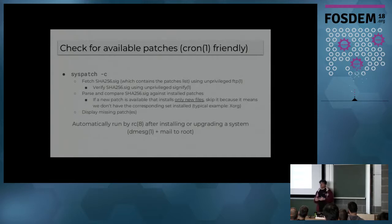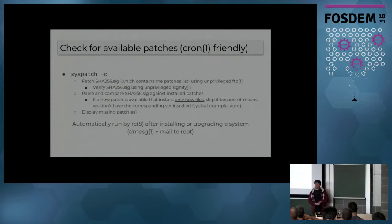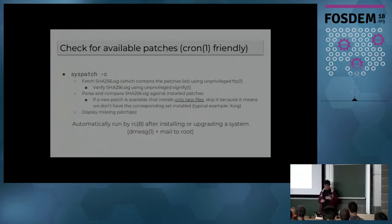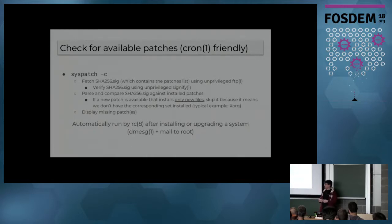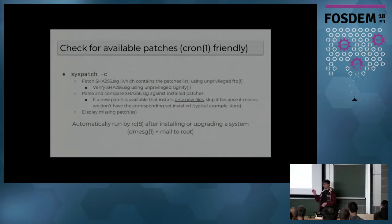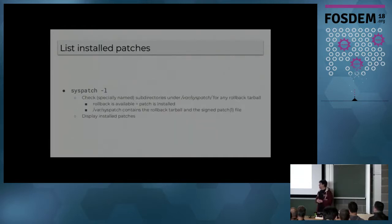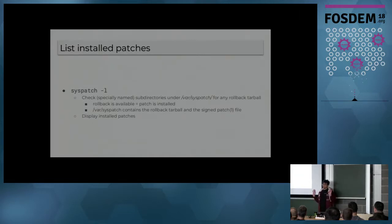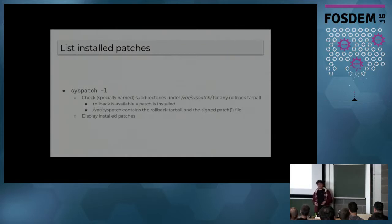We have syspatch minus c — that's the check option. It will fetch the signature file, verify it using signify, and then compare what's inside that signature file against the installed patches on the system, building a list of what's missing. It's automatically run by our RC system once you upgrade to a new release, so you will see in your dmesg output if you have missing patches, and it will send a mail to root as well. We have the minus l option to list the actually installed patches — it just looks into the var/syspatch directory and lists what's there.